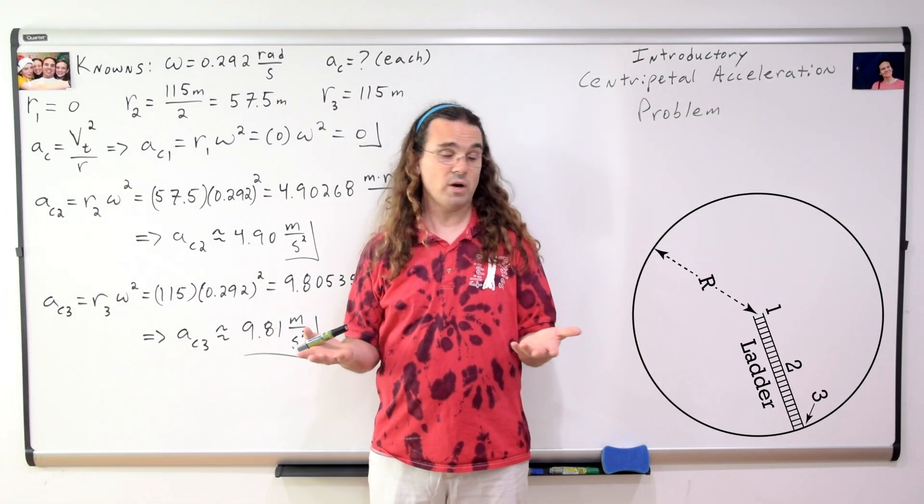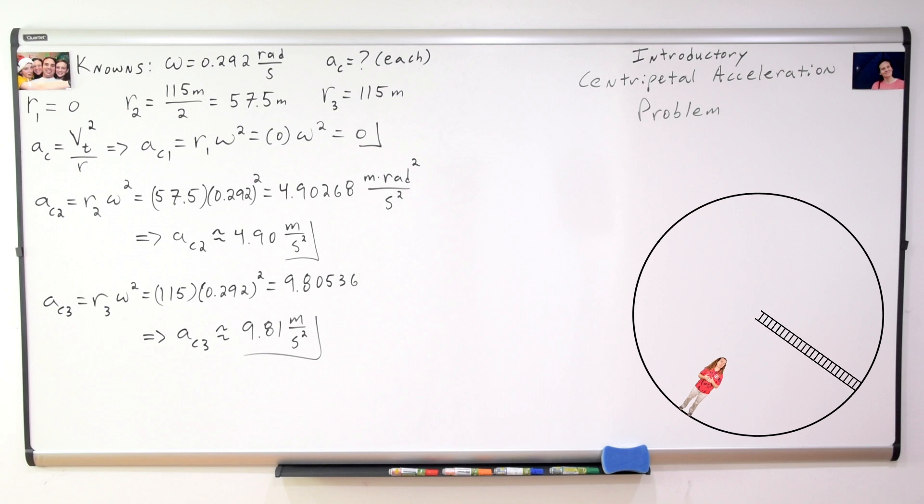Yes. When I stand on the interior rim of this rotating space station, I experience a centripetal acceleration equal to the acceleration due to gravity here on planet Earth. This is called artificial gravity. I actually feel as if I weigh exactly what I normally do on Earth.